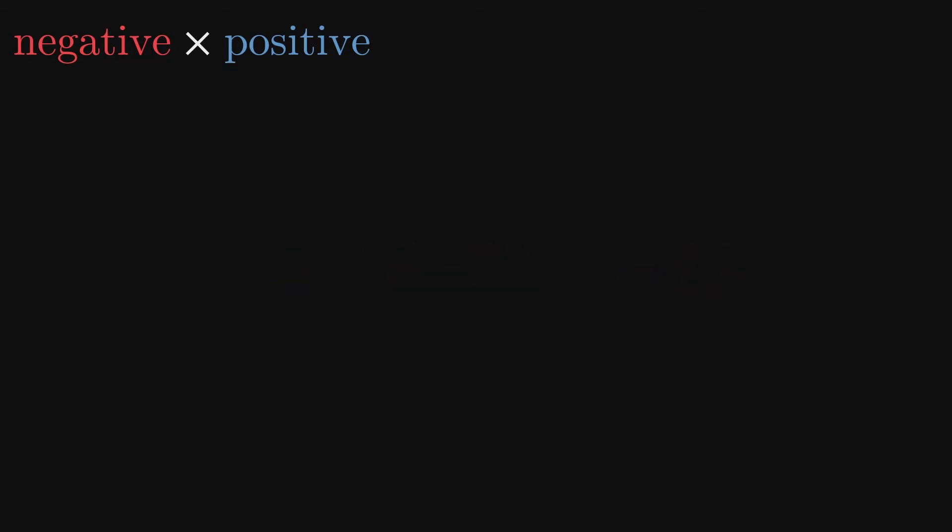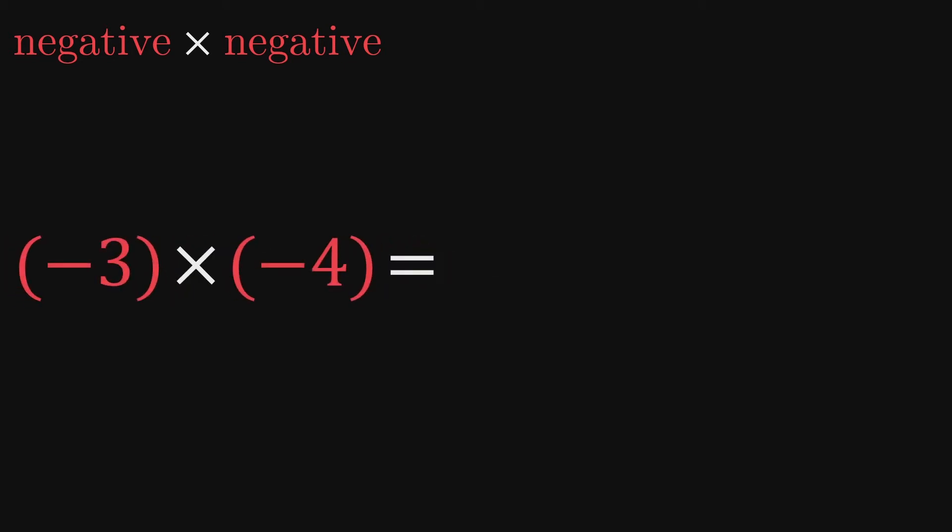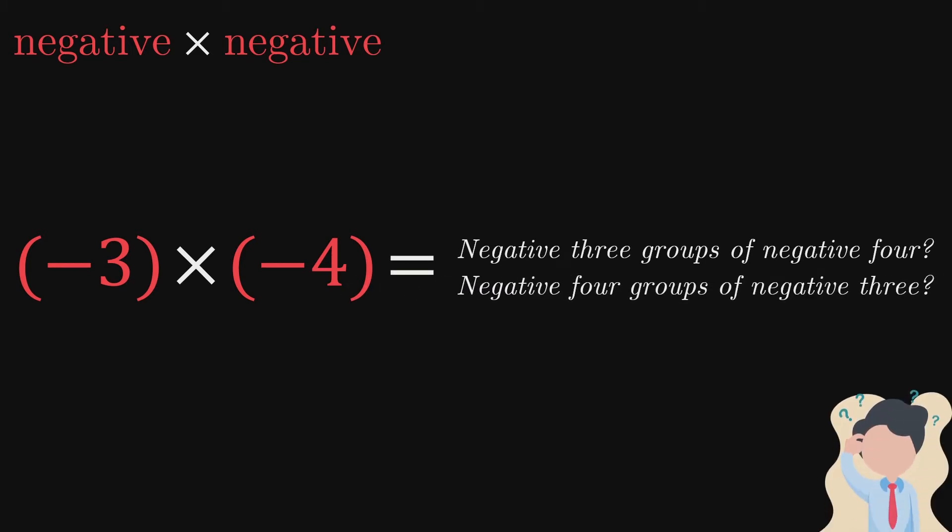If we try taking this approach with two negatives, we quickly get stuck. For example, thinking of negative 3 times negative 4 as negative 3 groups of negative 4 is equally as confusing as negative 4 groups of negative 3.